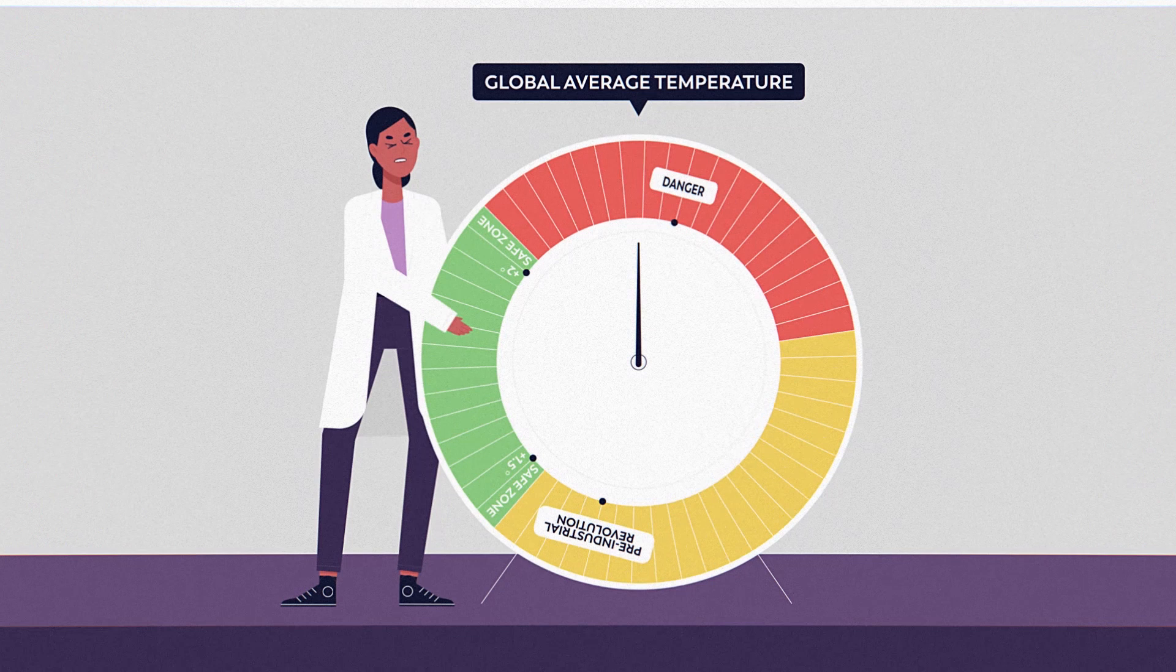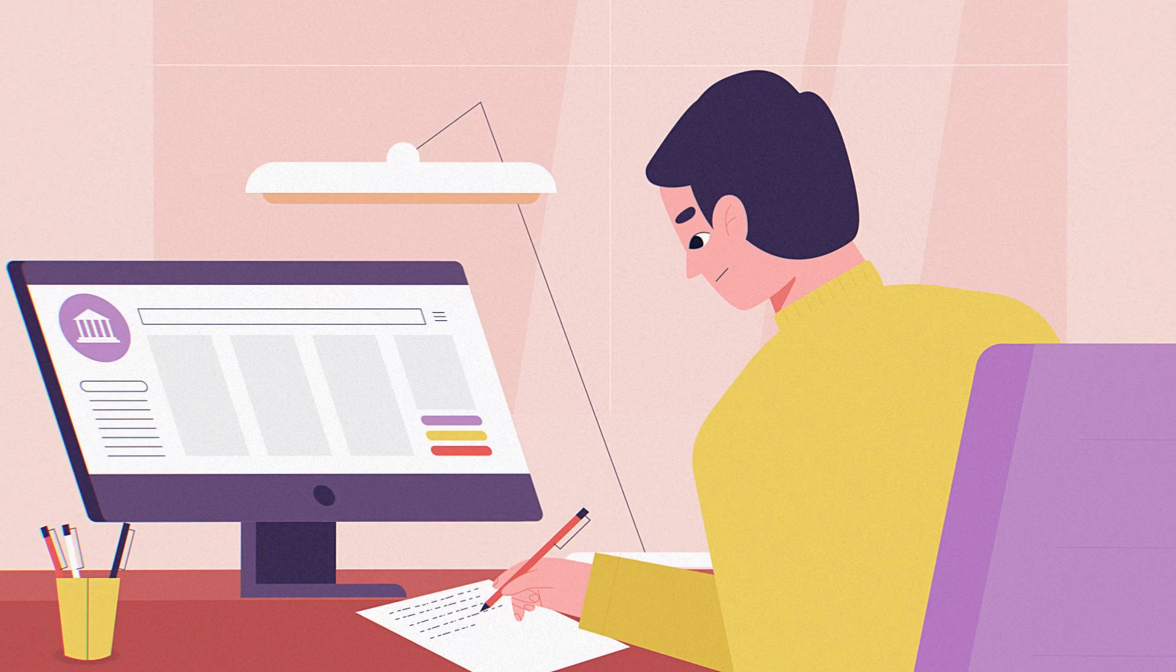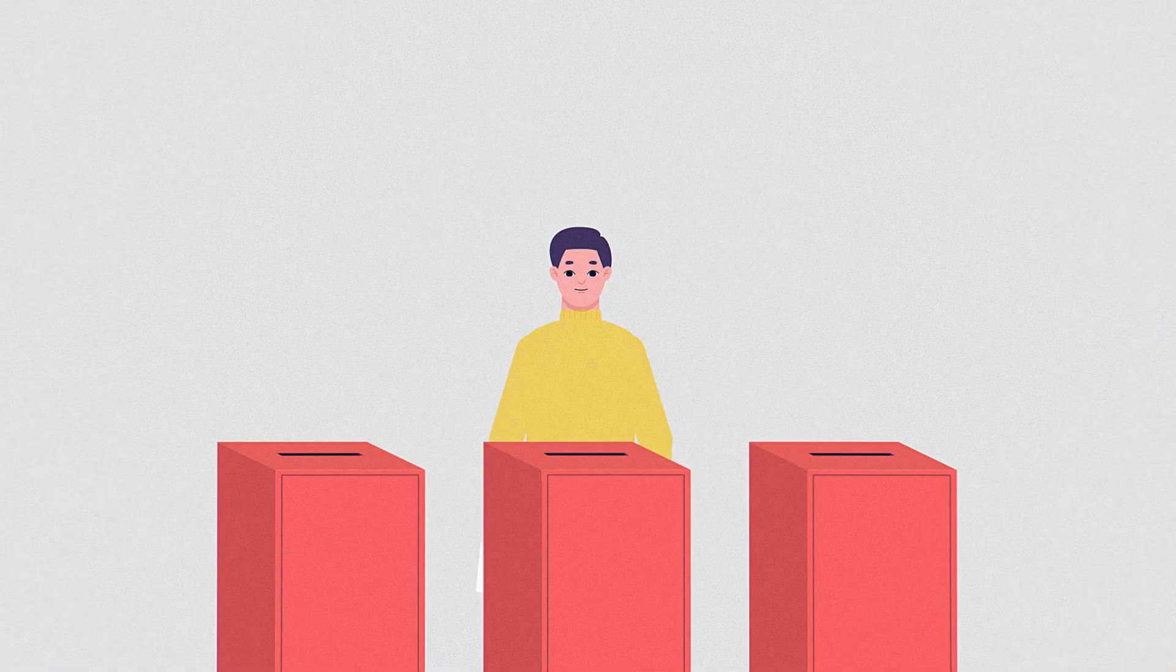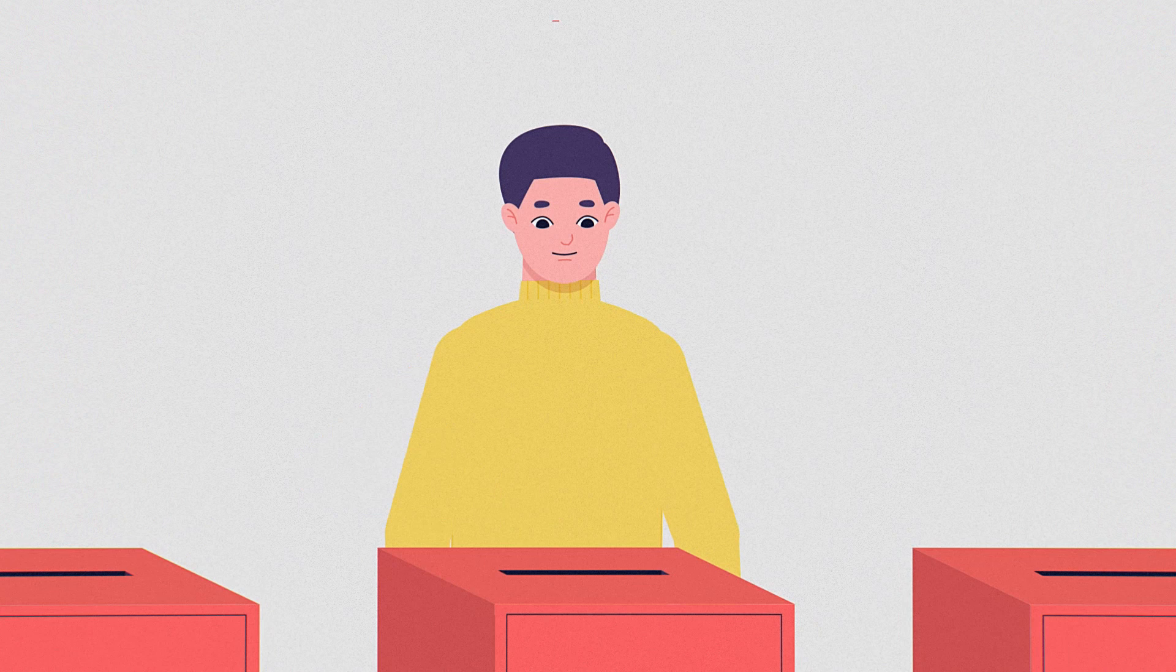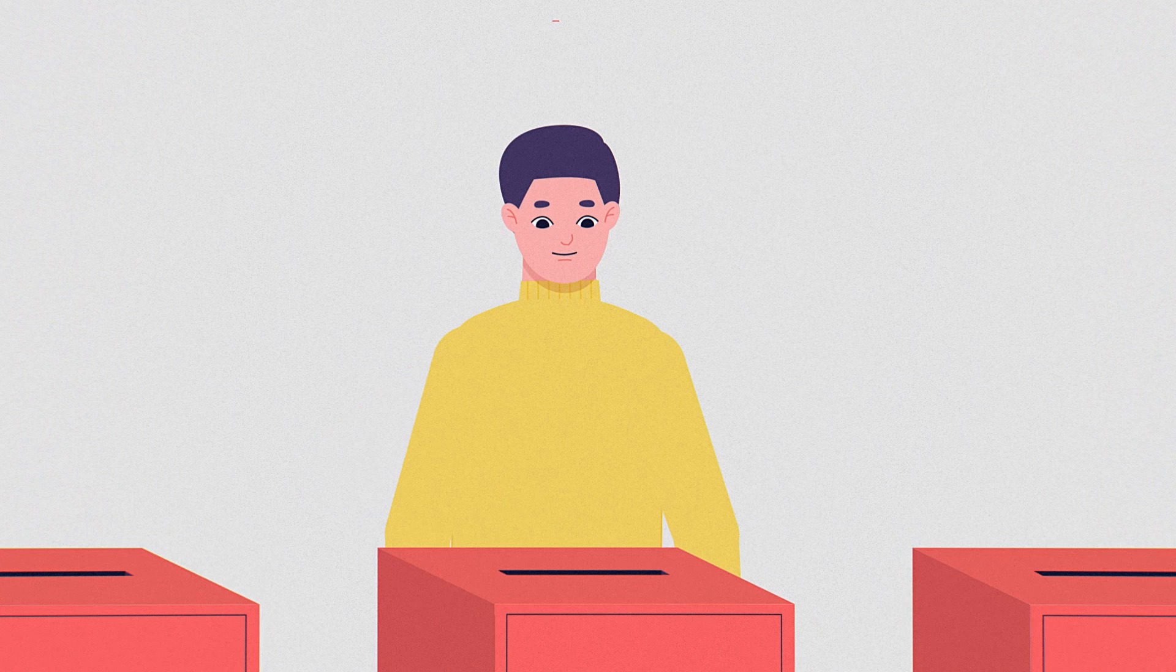What can we do to keep warming under control? Educate yourself and others. Encourage leaders and governments to adopt climate goals. Write letters to elected officials. Attend town halls. Vote for leaders who get it. These efforts may feel small, but remember that small changes can make a big difference.